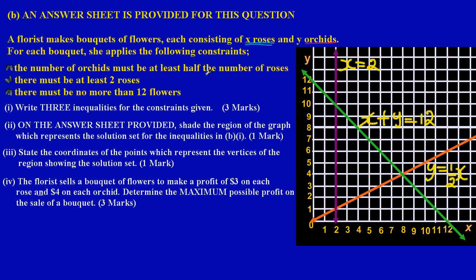The constraints given are: first, the number of orchids must be at least half the number of roses; second, there must be at least two roses; and third, there must be no more than twelve flowers.